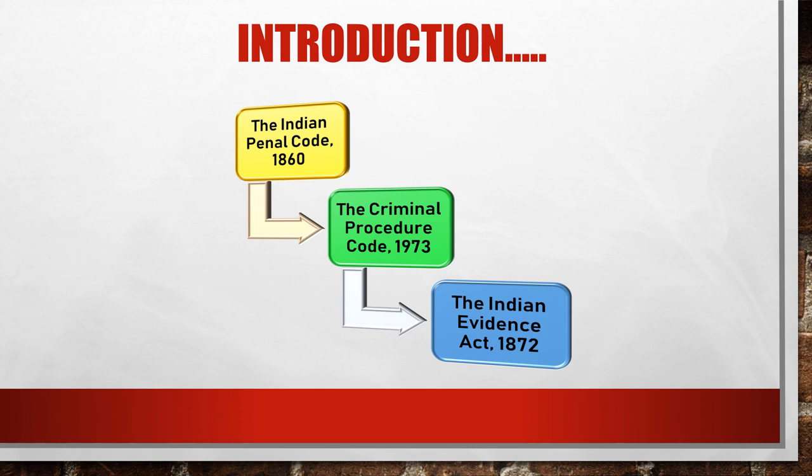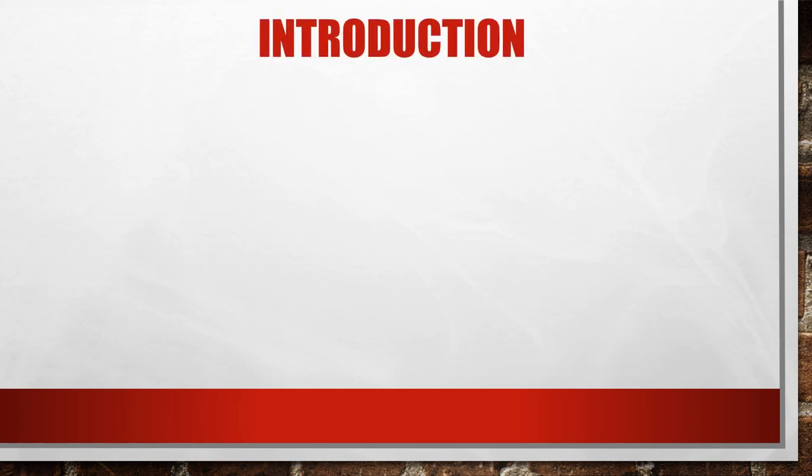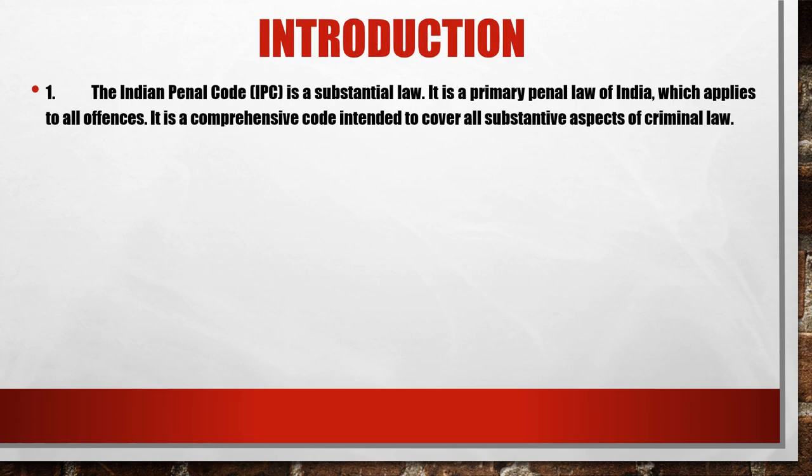The first one is the Indian Penal Code, which is a substantive law. It is the primary penal law of India which applies to all offences. It is a comprehensive code intending to cover all substantive aspects of criminal law — that means in IPC, all the offences and the punishments related to them have been mentioned.